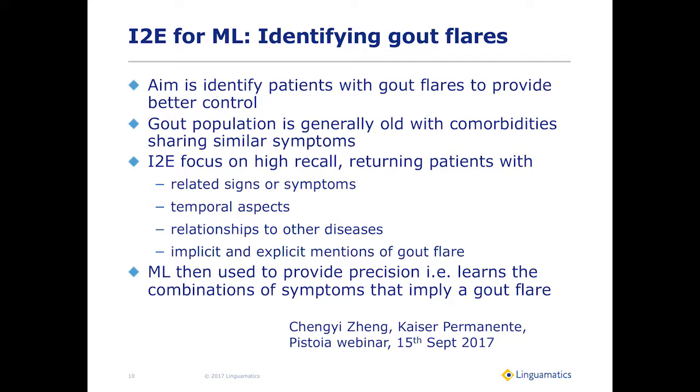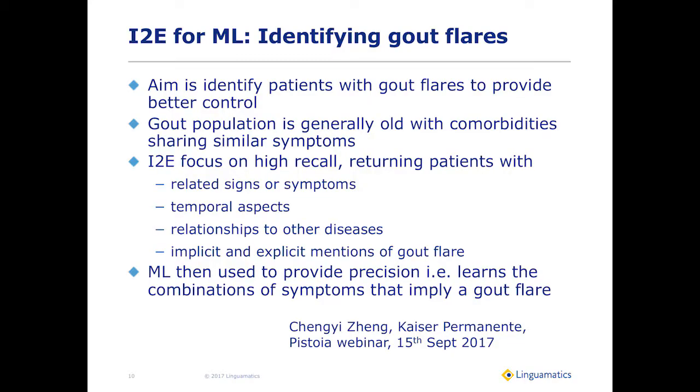Moving to a customer case study: Cheng Yi Zheng presented this a few weeks ago as part of the Pistoia webinar series. This is a nice use case around gout flares — a difficult condition because the population is generally old and has other conditions with overlapping symptoms. You actually want to identify people who do have a gout flare, because treatment is different for a gout flare versus other conditions. I2E concentrated on high recall, returning patients with related signs or symptoms, temporal aspects, relationships to other diseases, and implicit and explicit mentions of gout flare.